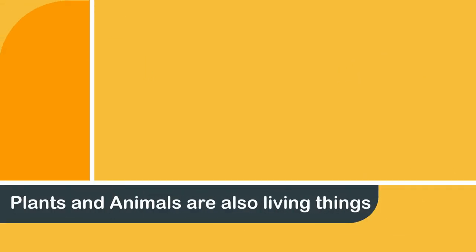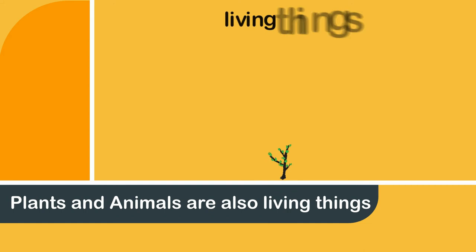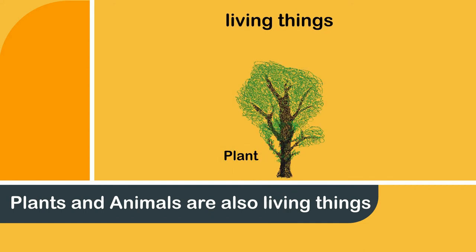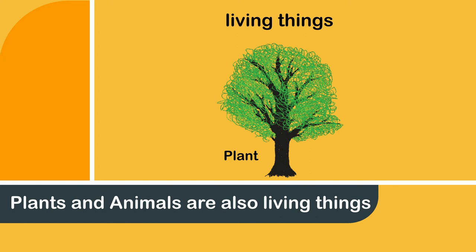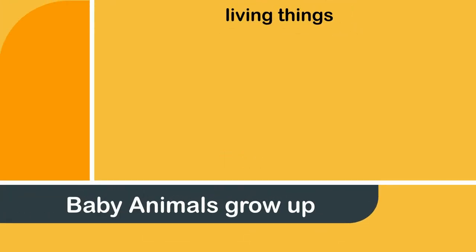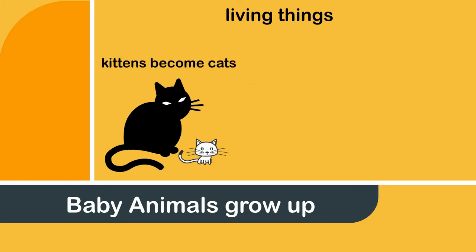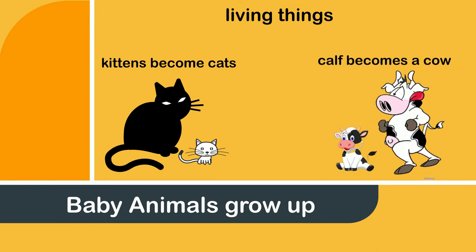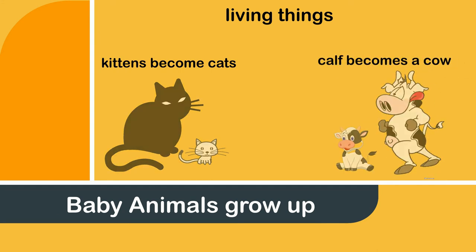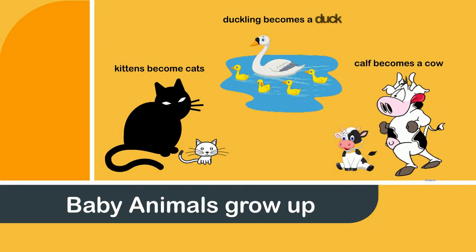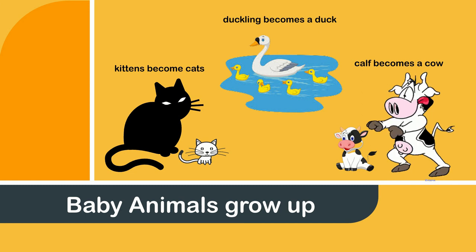Since plants and animals are also living things, they grow too. A seed starts as a small plant and then grows more to become a tree. Similarly, baby animals grow up and become big animals, such as kittens become cats, a small calf becomes a cow, and a little duckling becomes a duck.